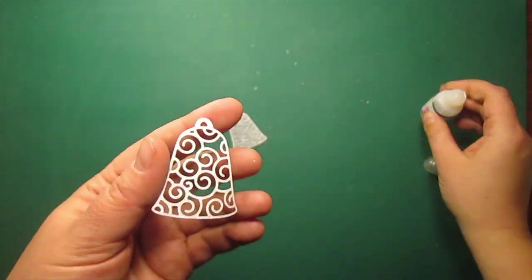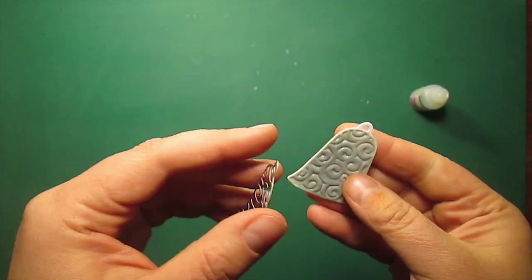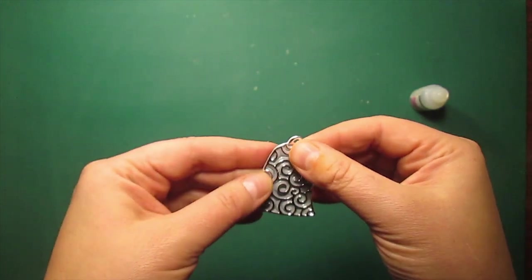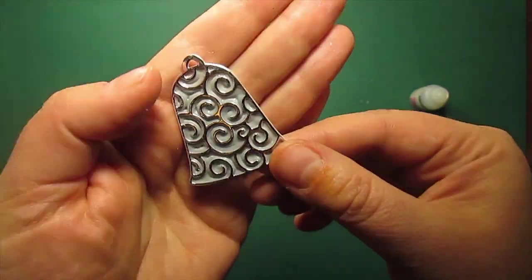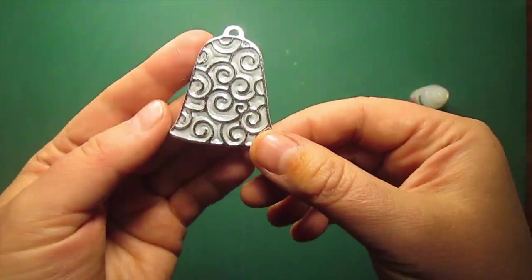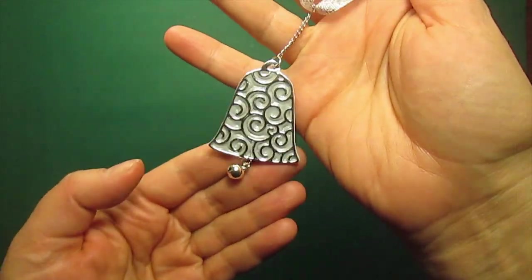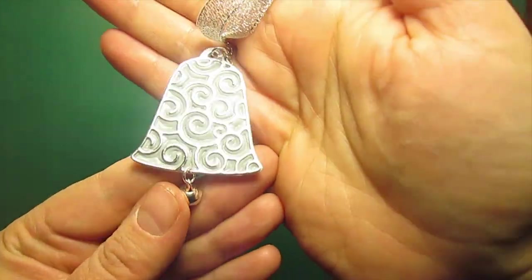I have die cut the bell one more time out of the silver mirror card stock and now I am sticking it on top of the enameled bell with glossy accents. And look at this, you can hardly say it is made of paper, it looks just like enameled jewelry. I have just attached the chain and a real bell for a charm and the tag is complete.